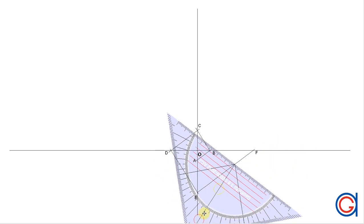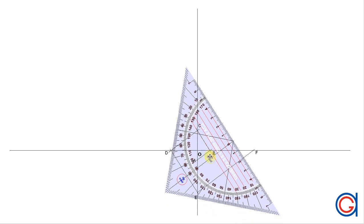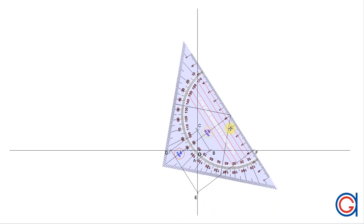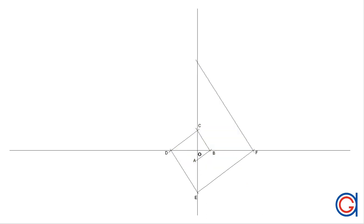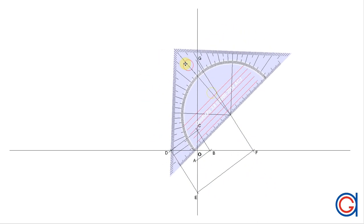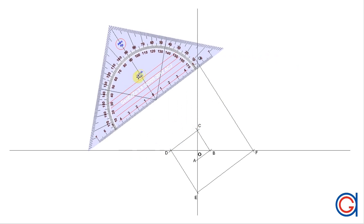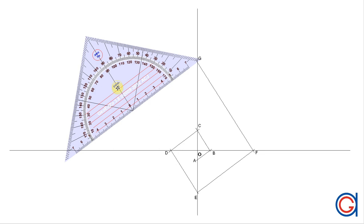Continuing again, we draw a perpendicular line to the line segment DE from point F until it cuts our vertical axis at a point G. And finally, we draw a perpendicular line to the line segment EF from point G until it cuts our horizontal axis at a point H, as can be seen here.